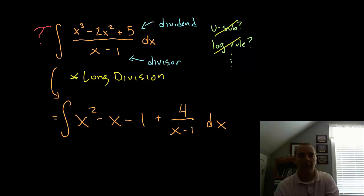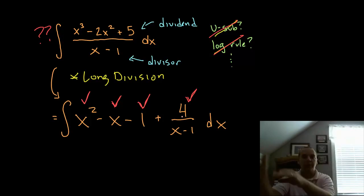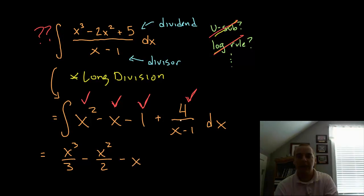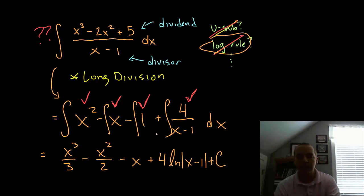Now if you go through term by term, this original expression was too complex to integrate directly — not u-substitution, not the log rule. But now: x squared I can integrate, x I can integrate, 1 I can integrate, and 4 over x minus 1 is easy to integrate. So doing long division gives you individual terms we can easily integrate. The integral of x squared is x cubed over 3 by the power rule, minus x squared over 2 by the power rule, minus x, and then the 4 can come out front and the integral of 1 over x minus 1 is the natural log of the absolute value of x minus 1. If you're not familiar with log integrals, you can watch one of my videos specifically on the log rule.